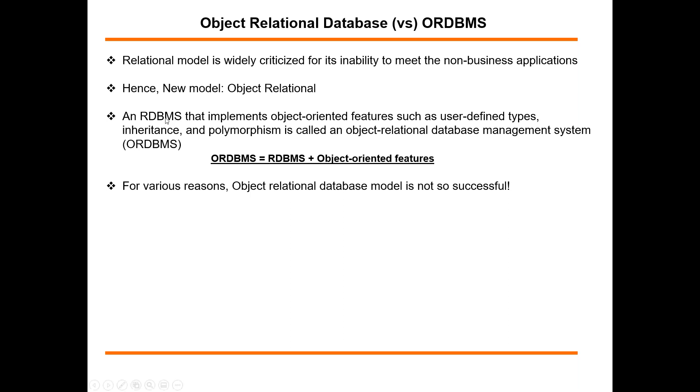Here is a quick definition of it. An object relational database management system is nothing but a relational database plus object-oriented features. Object-oriented features such as the facility and flexibility to define new data types, user-defined types, inheritance, and polymorphism.